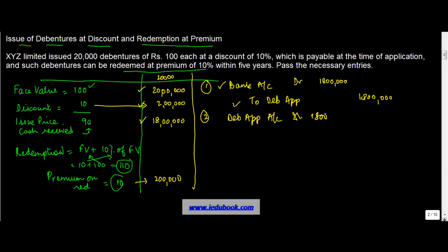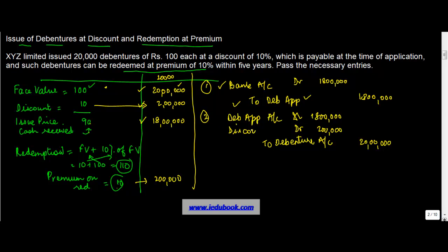The second entry is to transfer the Debenture Application Account balance of Rs. 18,00,000 to the Debenture Account. However, the face value of the debentures is Rs. 20,00,000, so the liability created is Rs. 20,00,000. Rs. 18,00,000 came in at the time of application, and the balance of Rs. 2,00,000 is the discount on issue of debentures.